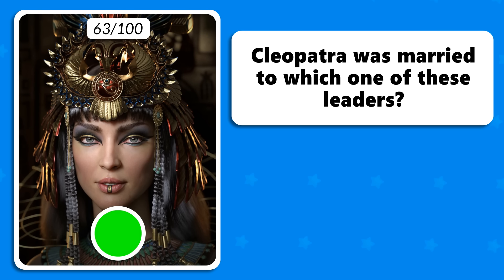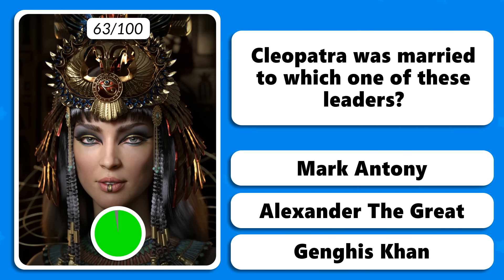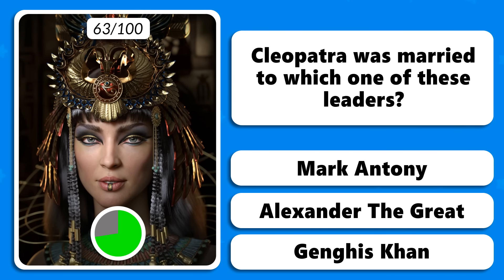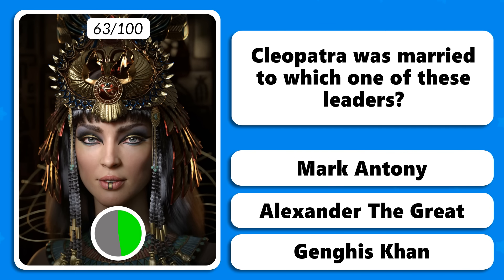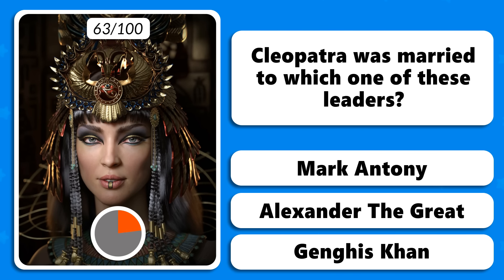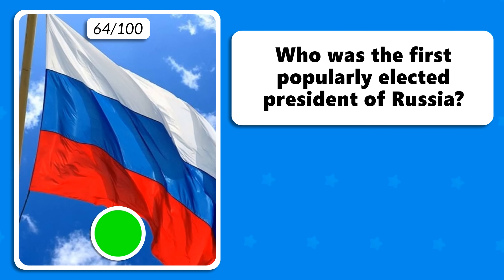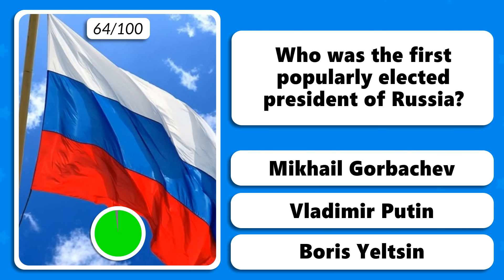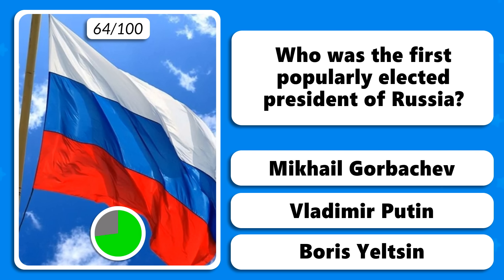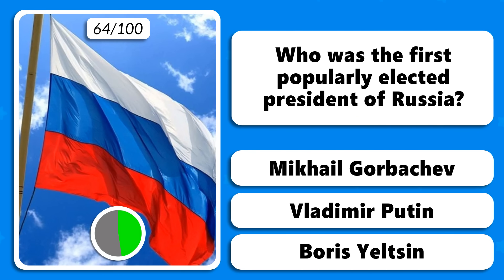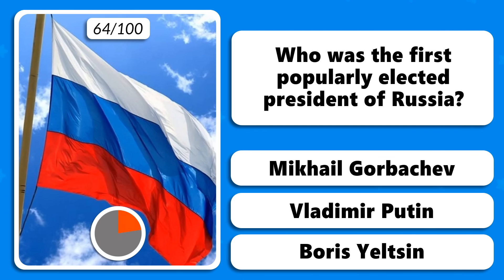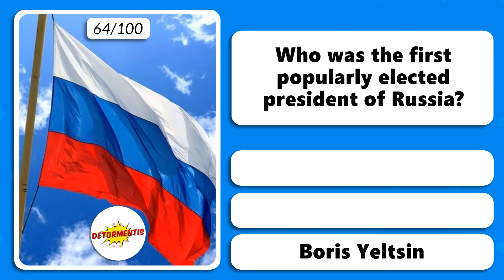Cleopatra was married to which one of these leaders — Mark Anthony, Alexander the Great or Genghis Khan? She was married to Mark Anthony. Who was the first popularly elected president of Russia — Mikhail Gorbachev, Vladimir Putin or Boris Yeltsin? The answer is Boris Yeltsin.